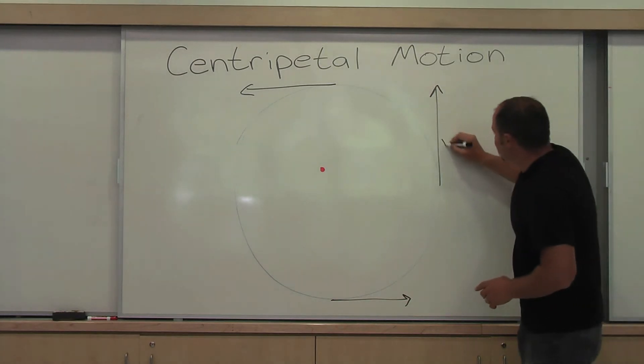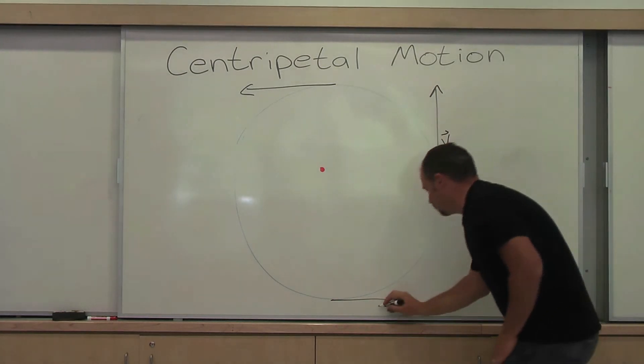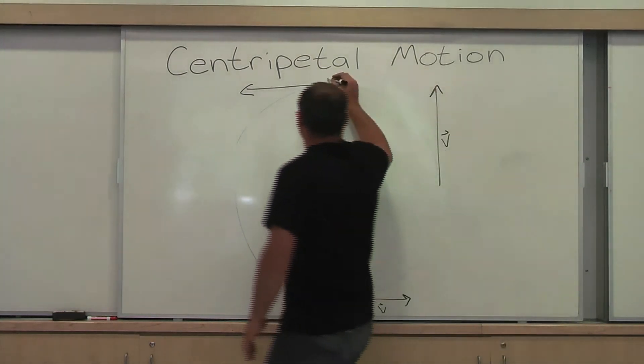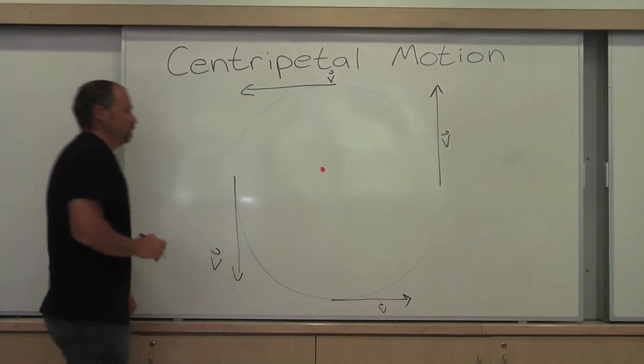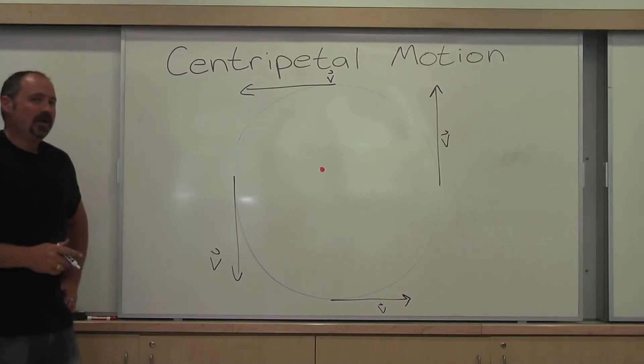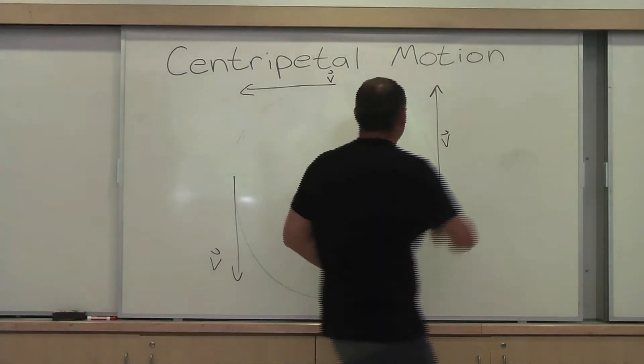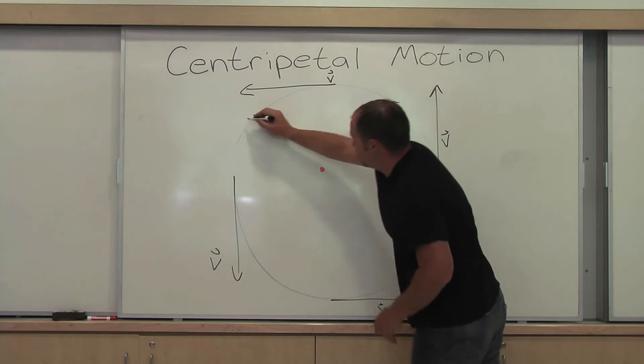These are the instantaneous velocities at these three points, respectively. And for completeness, I'll draw in this one as well. Well, the reason, I mean, the whole thing I should say, is going in a circle.